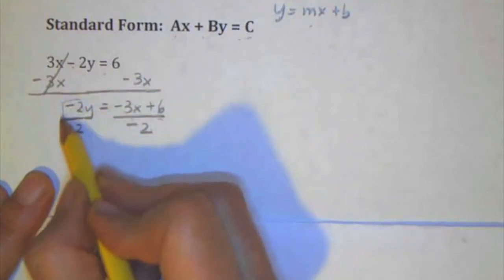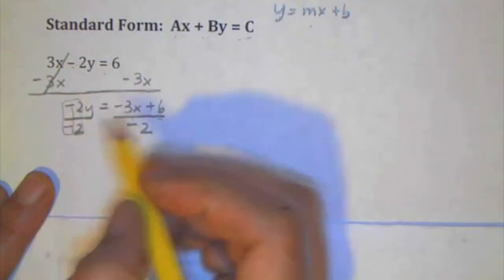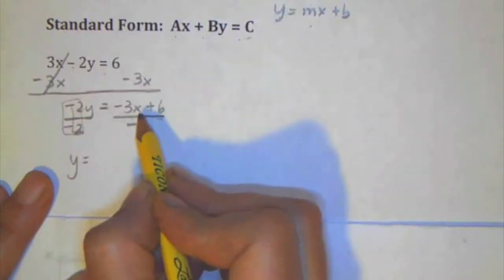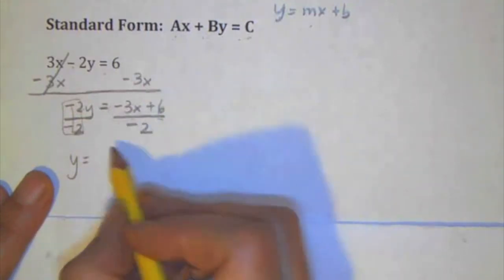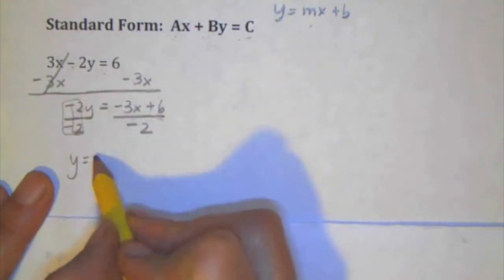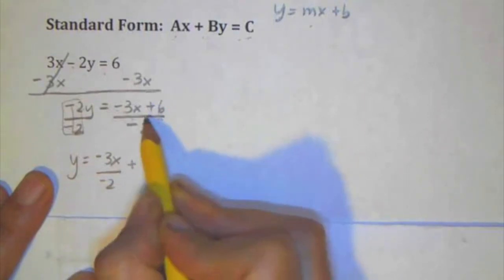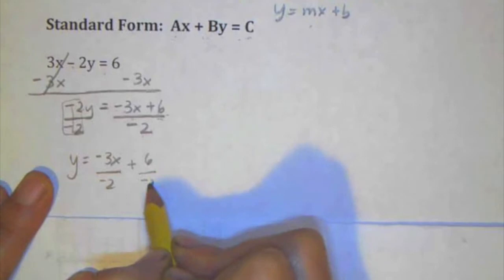So here, negative 2 over negative 2 is 1, so that's just a giant 1. Y equals, now I'm going to decompose this number, which means I'm going to break it into its component parts. So this is negative 3x over negative 2 and 6 over negative 2.